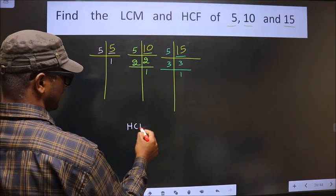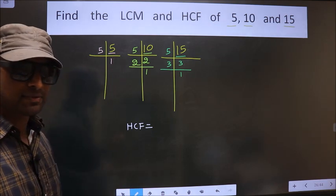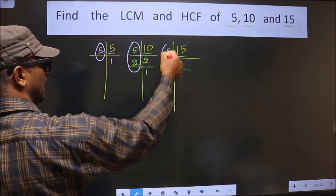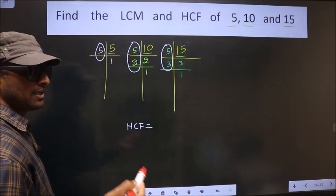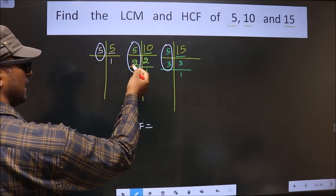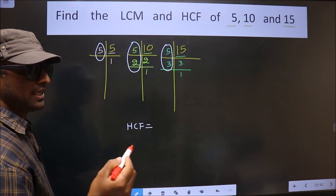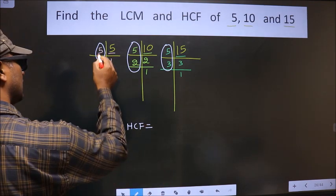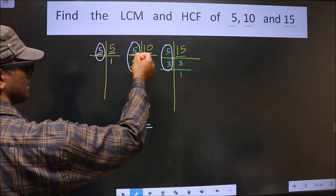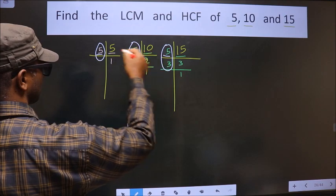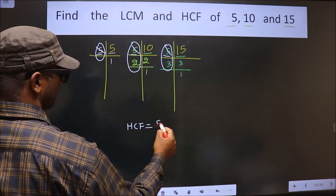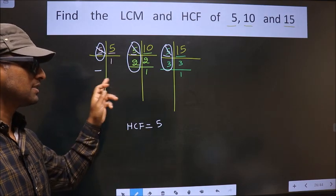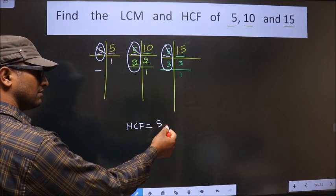Now, our HCF is the product of numbers that must be present in all three factorizations. We should find the numbers present in all three places. Starting with the number 5 — do we have 5 here? Yes. Do we have 5 here? Yes. So we have only one number, 5, present in all three places. Therefore, this is our HCF.